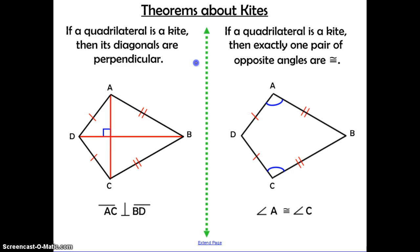Here are two theorems about kites. First: if a quadrilateral is a kite, then its diagonals are perpendicular — AC is perpendicular to DB, meaning they intersect to form a right angle. Second: if a quadrilateral is a kite, then exactly one pair of opposite angles are congruent. The pair of congruent angles are the ones in between the different side lengths — the angle between sides marked 1 and 2 on each end.